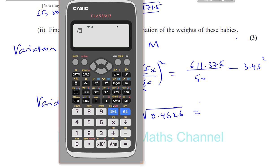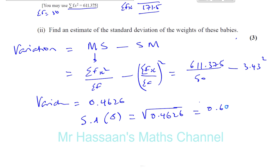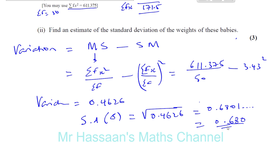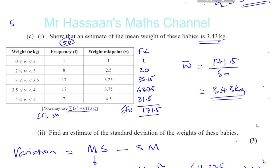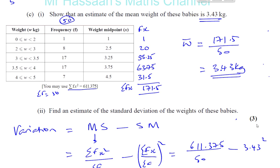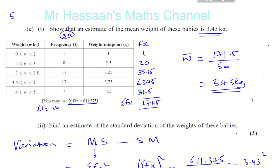The standard deviation, sigma, is the square root of 0.4626. Taking the square root gives us 0.6801, so we can say 0.680 to 3 significant figures. That's the standard deviation of the weights of these babies in kilograms. So there we have our answers for 5C. I'm going to do 5D in a separate video.